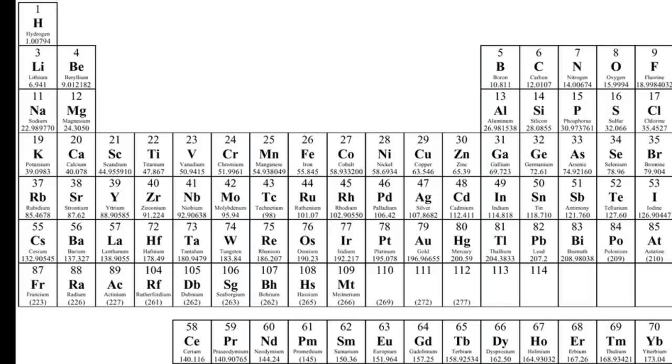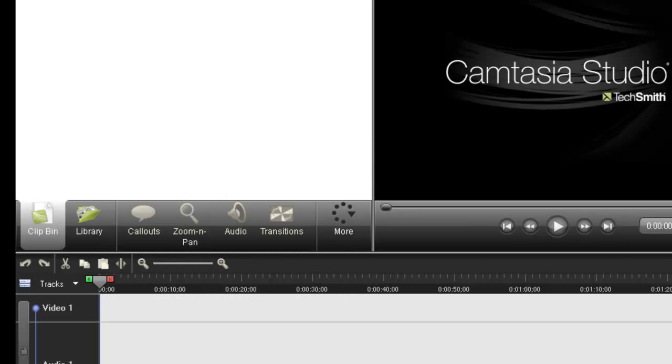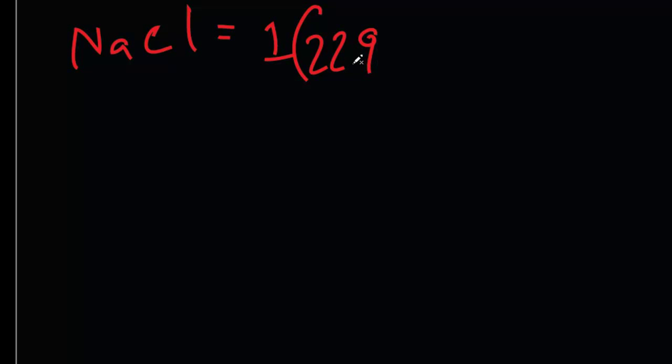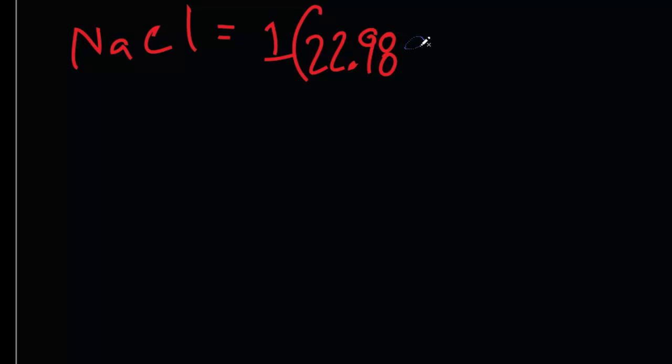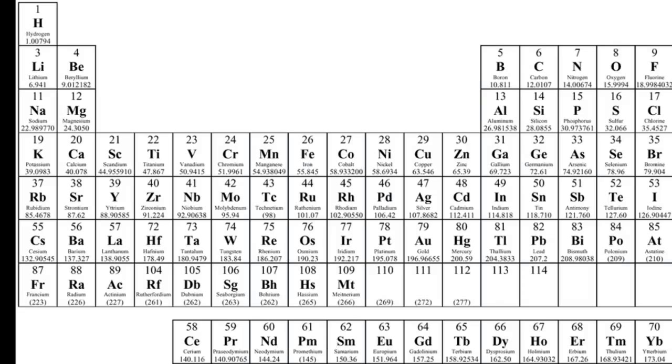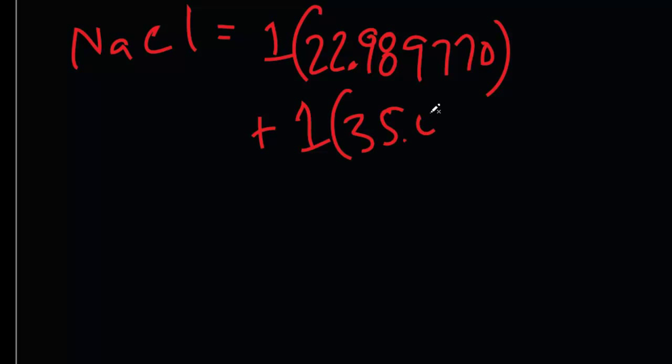Let's try another one: table salt, sodium chloride. How much does it weigh? Well, what's its molar mass? 1 times sodium is 22.989770. What was that again? 22.989770 plus 1 times chlorine, we have 1 atom of chlorine, 35.4527. Let's add these guys up and see what we get. Again, we can only go to the 10,000th place based on our rule of significant figures. And we have 22.989770 plus 35.4527, and I get 58.44247 grams per mole.